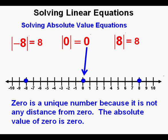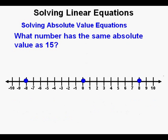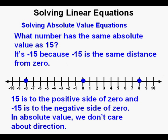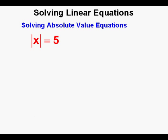Zero is an important number because it is not any distance from 0. The absolute value of 0 is 0. What number has the same absolute value as 15? It is negative 15, because negative 15 is the same distance from 0 as 15. 15 is to the positive side of 0 and negative 15 is to the negative side. When it comes to absolute value, we don't care about the direction from 0 — just its distance from 0.